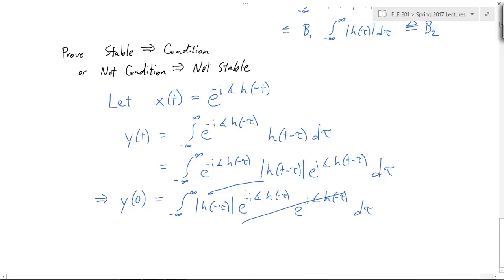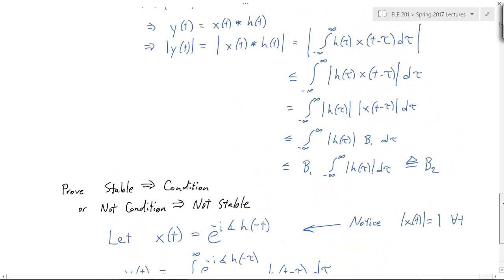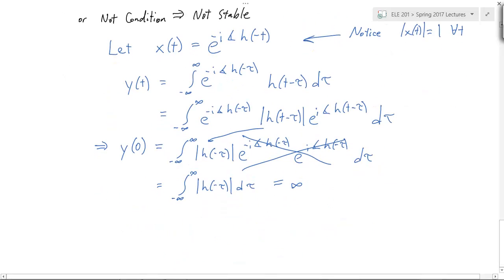So, all I have to do is plug in t equals zero. Let's bring the two phases together. Notice it's e to the negative i h of negative tau and then e to the i, the phase of h of negative tau. And, conveniently, the phase goes away because of how I've designed my input. So, this equals the integral of h of negative tau, which equals infinity. So, notice that my input equals one in magnitude for all time. Therefore, I've satisfied the condition of BIBO. The input should be bounded, but the output is unbounded. It's infinite. So, this is not stable.